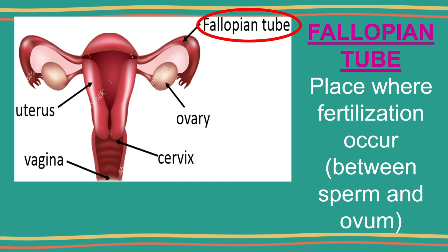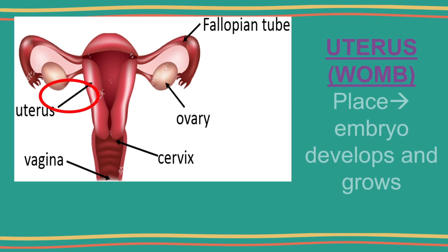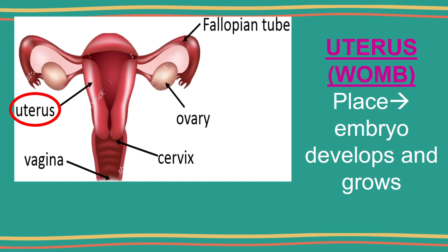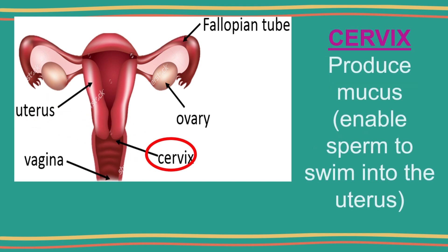The fallopian tube is a narrow and muscular tube which connects the ovary to the uterus. The uterus, or womb, is a pear-shaped organ with thick muscular walls where the embryo is implanted and develops during pregnancy.